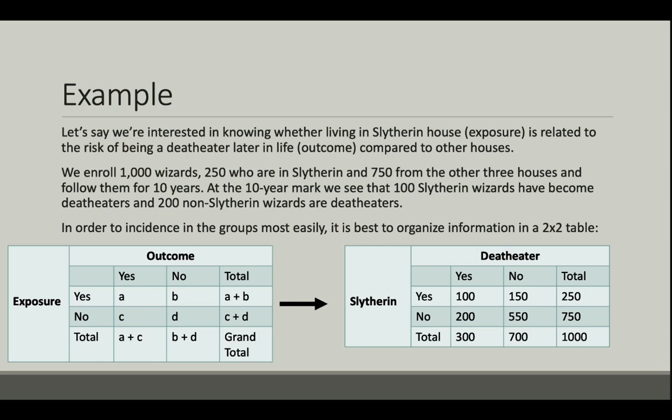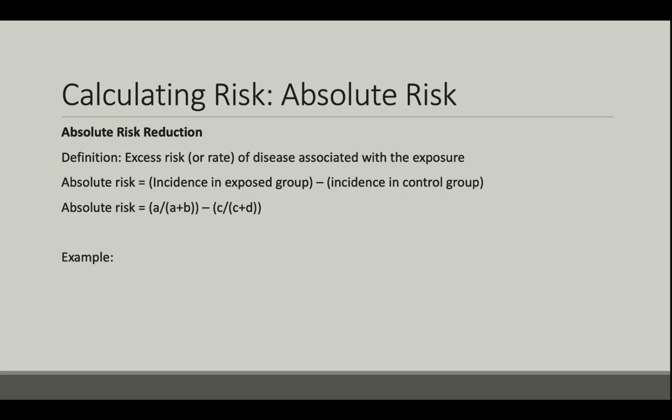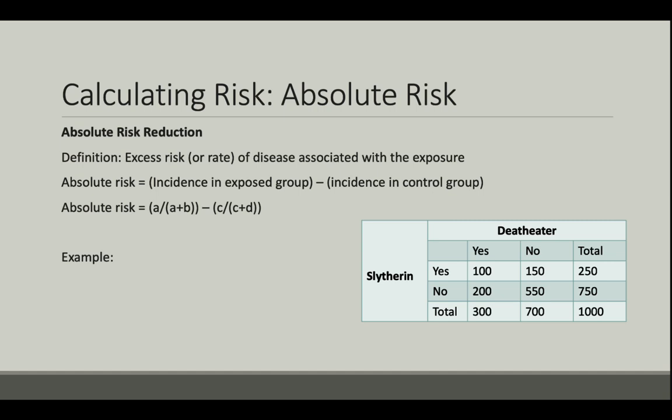In order to calculate the incidence in each group most easily, it's best to organize the information in a 2x2 table, like here. The incidence in Slytherin is the number of new cases of death eaters — which is 100 — out of a total at-risk population of 250. Therefore, the incidence is 100 divided by 250, or 40%.